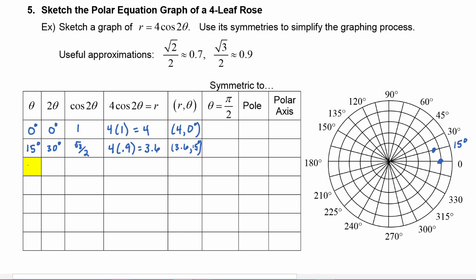Next we plug in 30 degrees. Two theta is then 60 degrees. The cosine of 60 degrees equals one-half, so to find r we take four times 0.5, which equals two. Our polar point is (2, 30°). We start at the pole, aim towards 30 degrees, and walk out a distance of two, and put a point there.